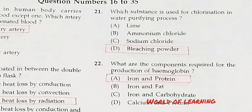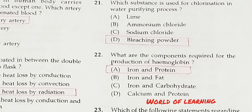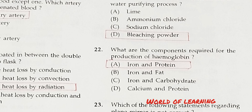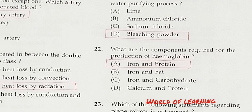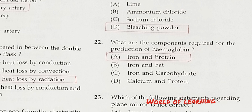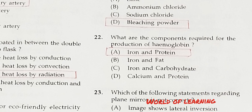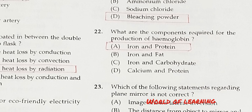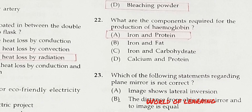Question 21: Which substance is used for chlorination in the water purifying process? Option A: Lime. Option B: Ammonium chloride. Option C: Sodium chloride. Option D: Bleaching powder. Correct answer is Option D, bleaching powder.